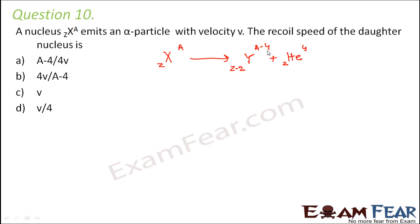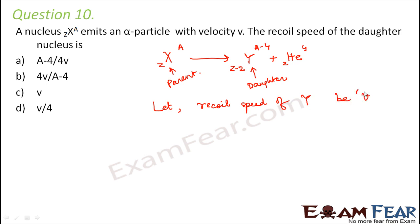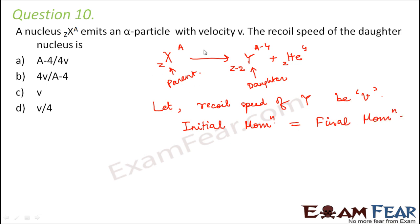We have to calculate the recoil speed of the daughter nucleus. Let us assume the recoil speed of the daughter nucleus is V1. As per conservation of linear momentum, the net initial momentum equals the net final momentum. The parent nucleus is at rest, so the net initial momentum is 0. After emission of the alpha particle, what is the final momentum?